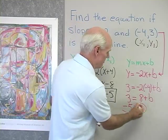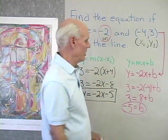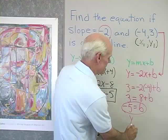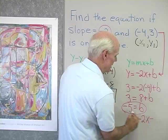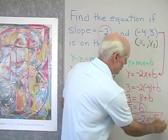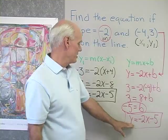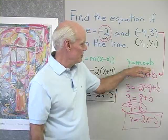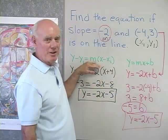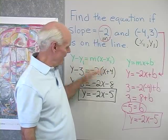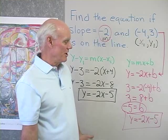So I have b equals negative five and m equals negative two, and now I can write the equation of the line: y equals negative two x plus negative five, or y equals negative two x minus five. You can see that either way I do this problem — using the slope-intercept form or the point-slope form — I end up with y equals negative two x minus five. Either way, you're always going to end up with the same result.